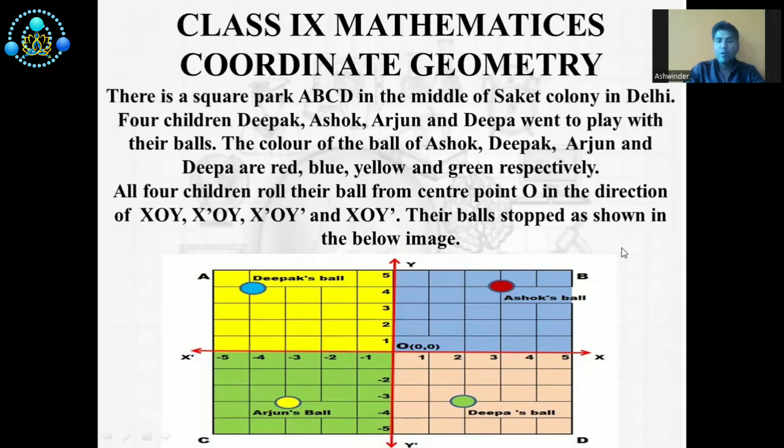The color of the ball of Ashok, Deepak, Arjun, and Deepa are red, blue, yellow, and green. All four children roll their ball from center point O in the direction of XOY,